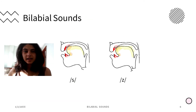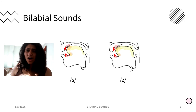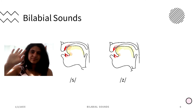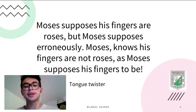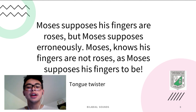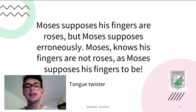Finally, practice with Nicholas in an interesting tongue twister. Thanks a lot for watching! 'Moses supposes his toeses are roses, but Moses supposes erroneously. Moses, he knowses his toeses aren't roses, as Moses supposes his toeses to be.'